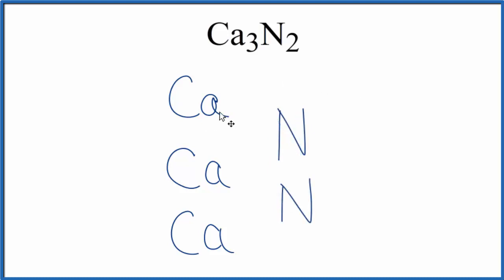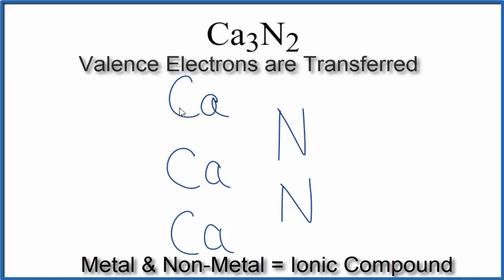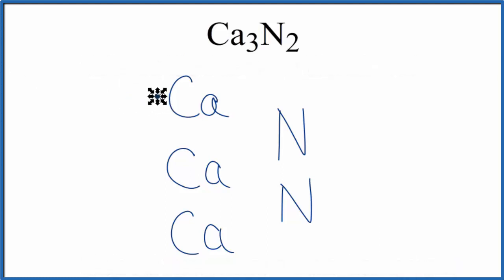So calcium is a metal. The nitrogen, that's a non-metal. So we're going to transfer electrons from the metal to the non-metal. If we look on the periodic table, calcium is in group two, so it has two valence electrons. So we'll give each calcium two valence electrons.